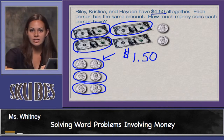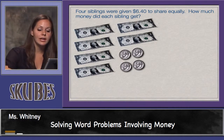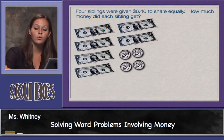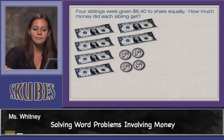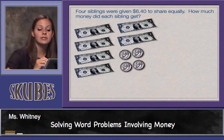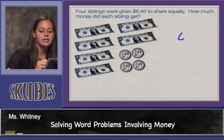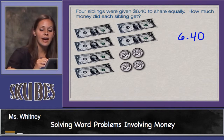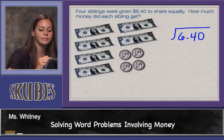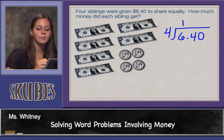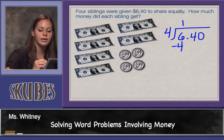Let's try another division problem. Four siblings were given six dollars and forty cents to share equally. How much money did each sibling get? Let's solve this using traditional long division: six dollars forty cents divided by four siblings. Four goes into six one time. Four times one is four. Subtract to get two. Make sure I put my decimal at the top.